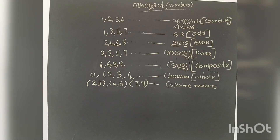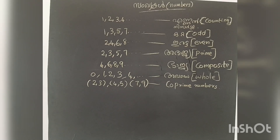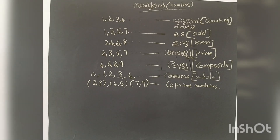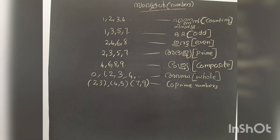We will learn divisibility rules. The unit place is 2, 4, 6, 8. We will learn divisibility rules. The unit place is 0, 2, 4, 6, 8.